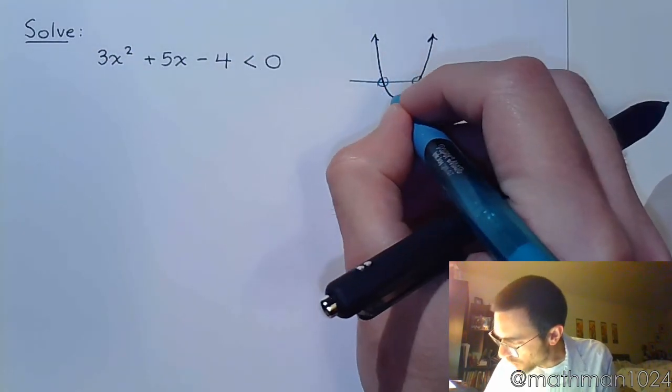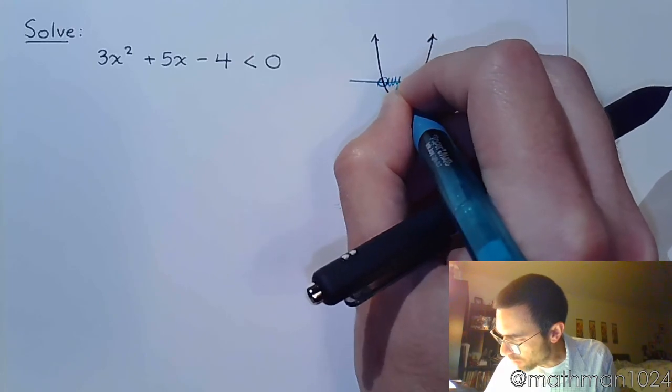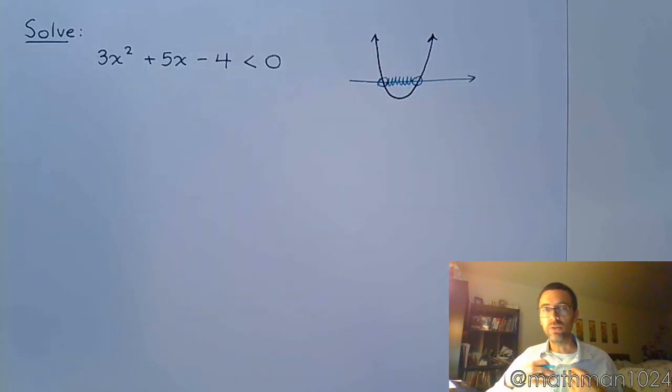So less than 0 is going to mean this region where it's below, so I know that I'm already looking here. So all I need to do is find those critical values.